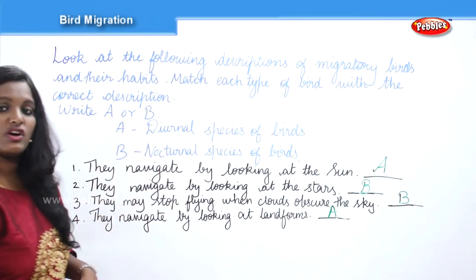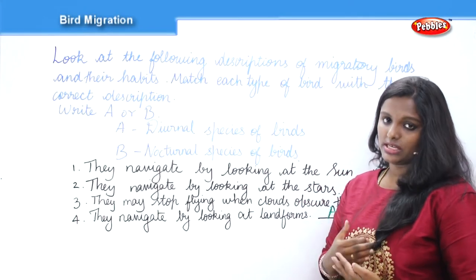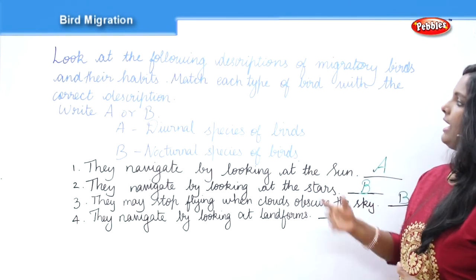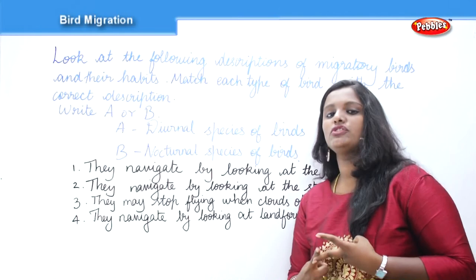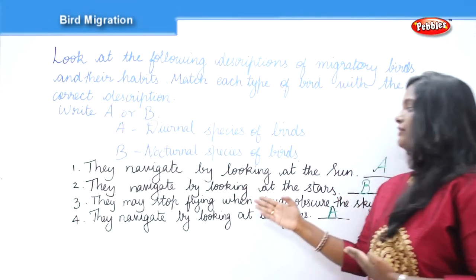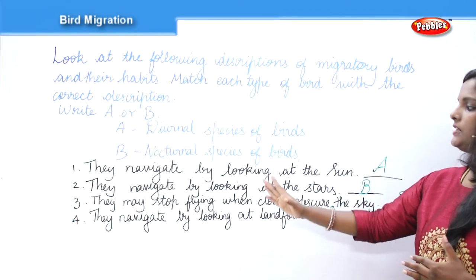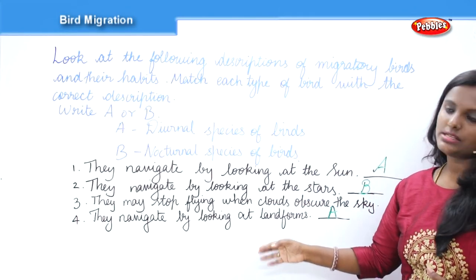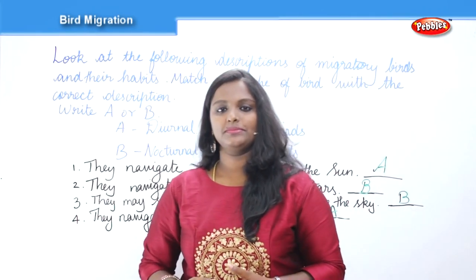That brings us to the end of this question type. We had the true/false/not given questions, and now the matching question where you are given two options — option A for diurnal and option B for nocturnal species of birds — and four descriptive statements to match accordingly.